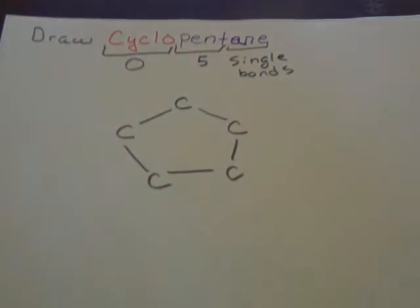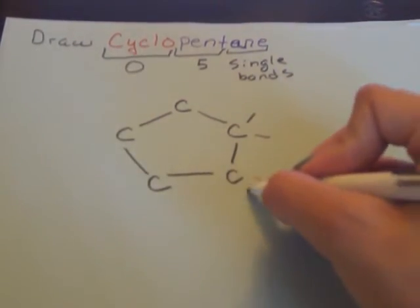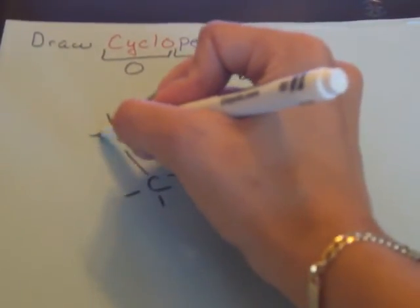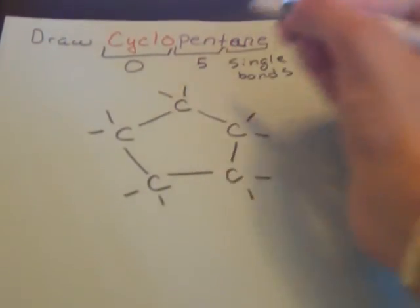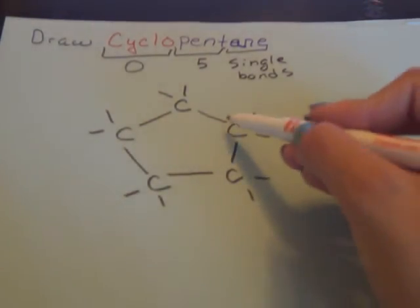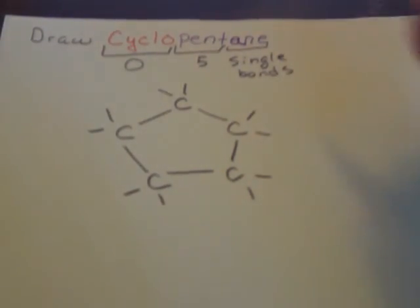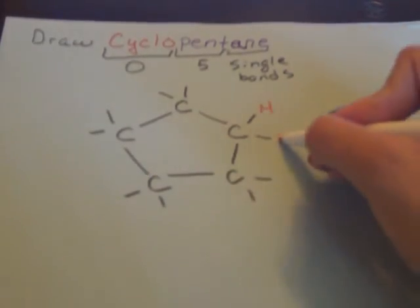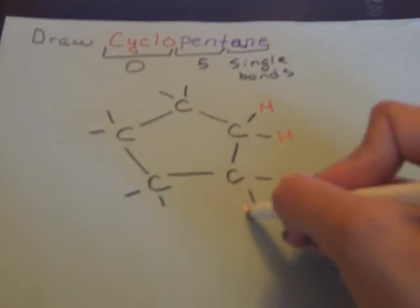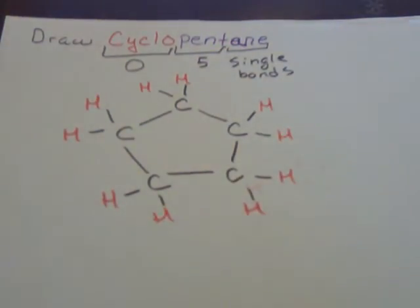Now all we need to do is add the hydrogens accordingly. Since carbon can hold four bonds, for each carbon we're going to add two hydrogens, because it's already connected by two bonds in the ring — so one, two, three, four, we're all full. And that is cyclopentane.